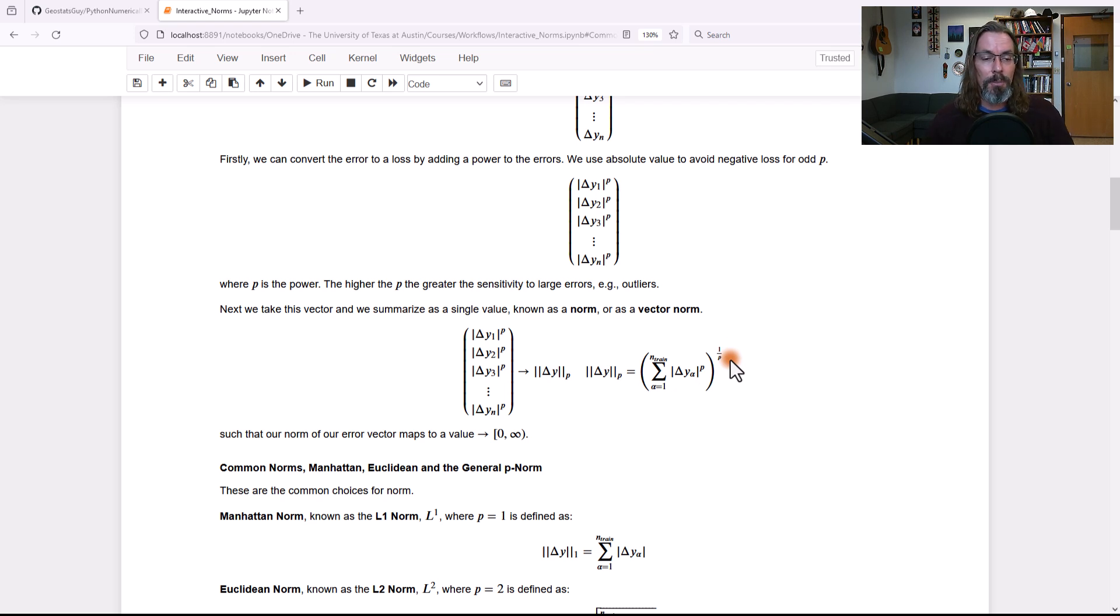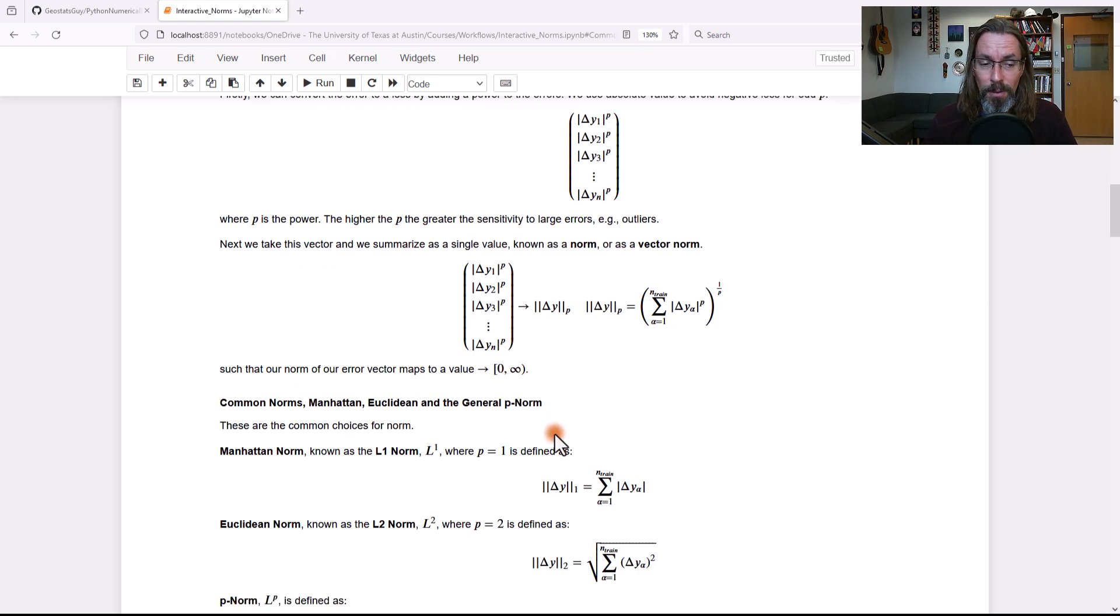Okay, so this is the common notation. Now, you'll notice that our norm has a proper behavior we'd expect for a norm. That is a single value that is non-negative. It can be zero and it can range all the way to infinity depending on the problem, but it can't be negative. We don't expect a negative norm.